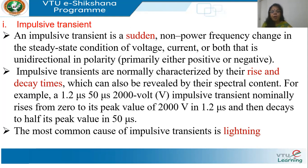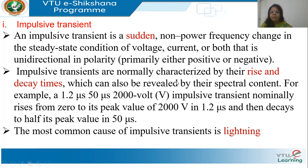For example, a 1.2/50 microsecond 2000-volt impulsive transient means it reaches its zero-to-peak value of 2000 volts in 1.2 microseconds, and then decays to 50% of its value in 50 microseconds. This is how we specify the transient: the rise time, the fall time to 50%, and the peak value.